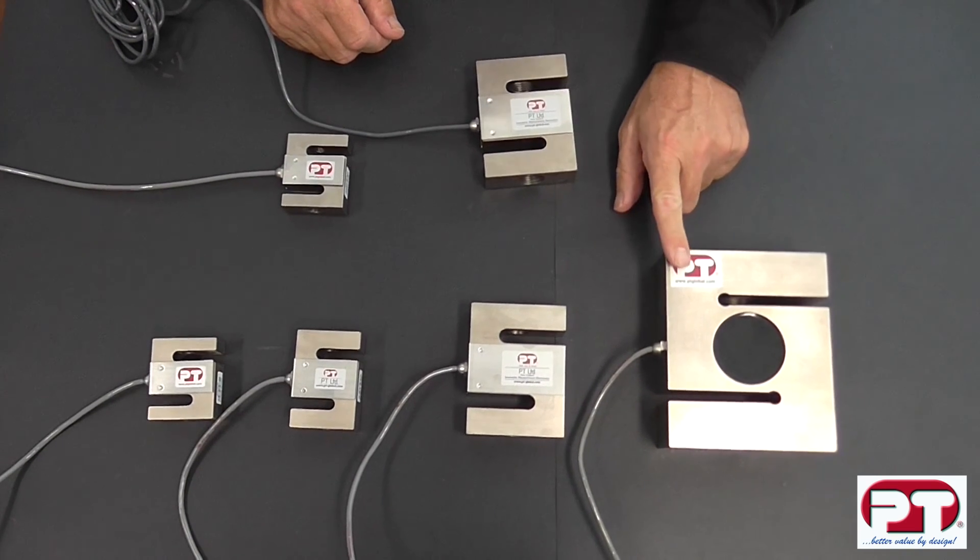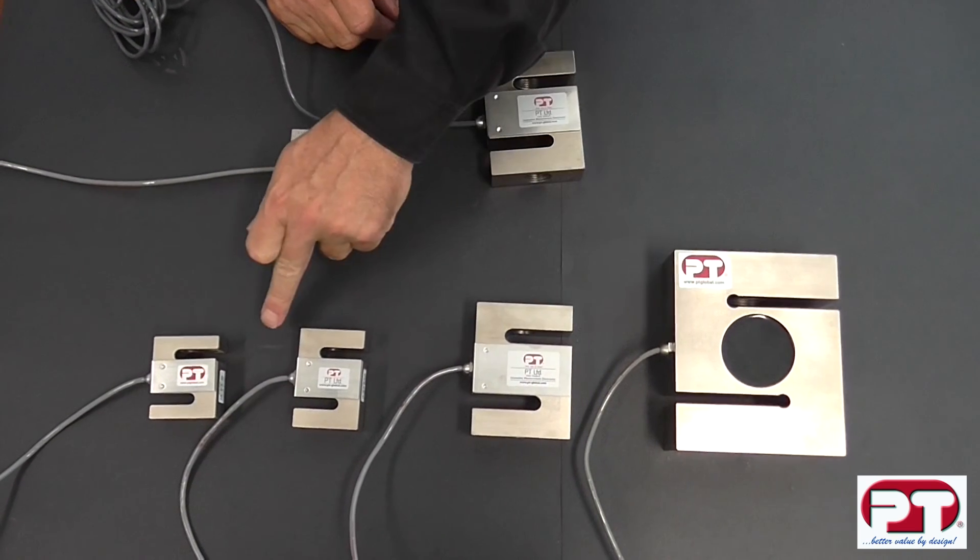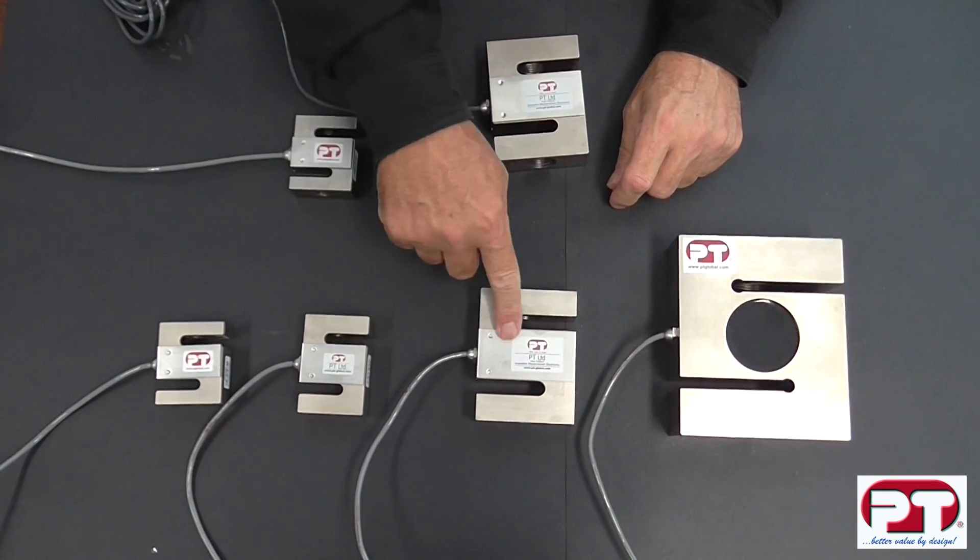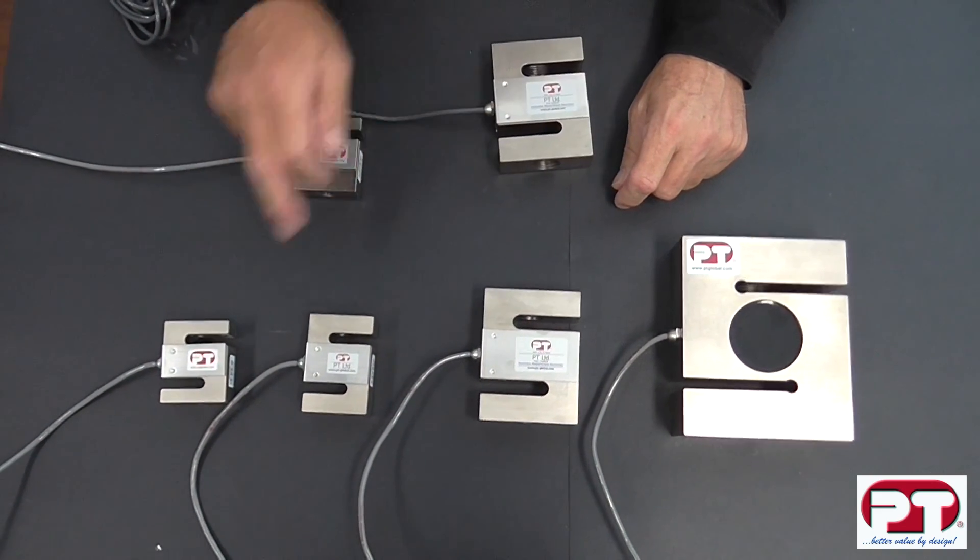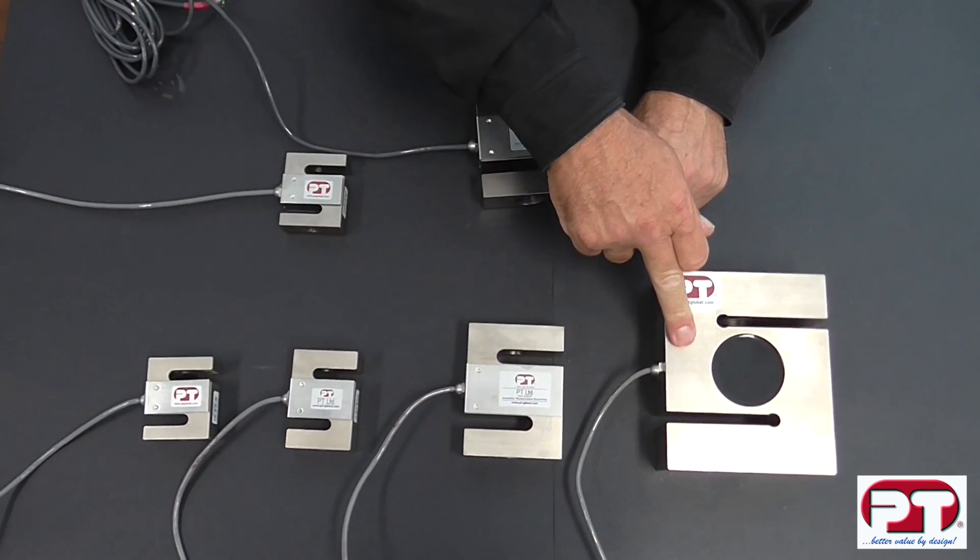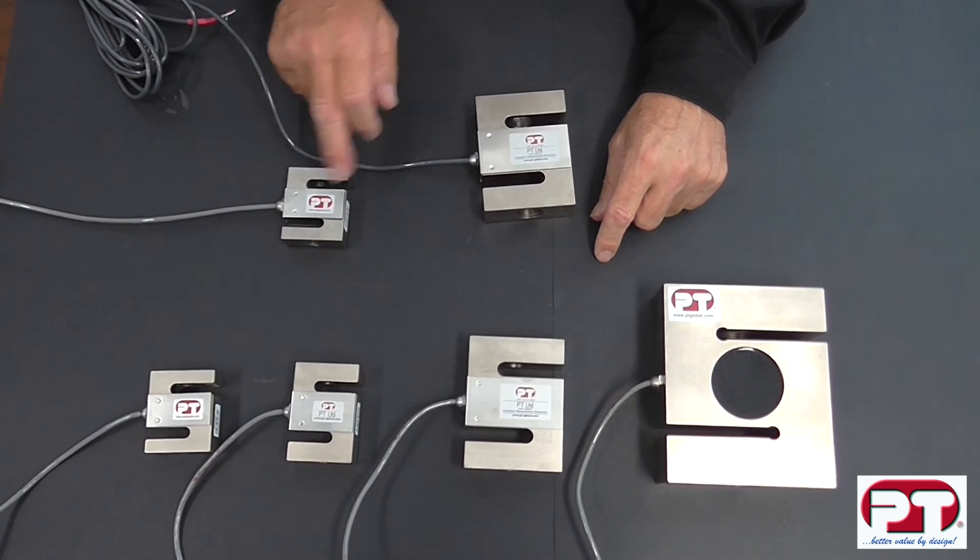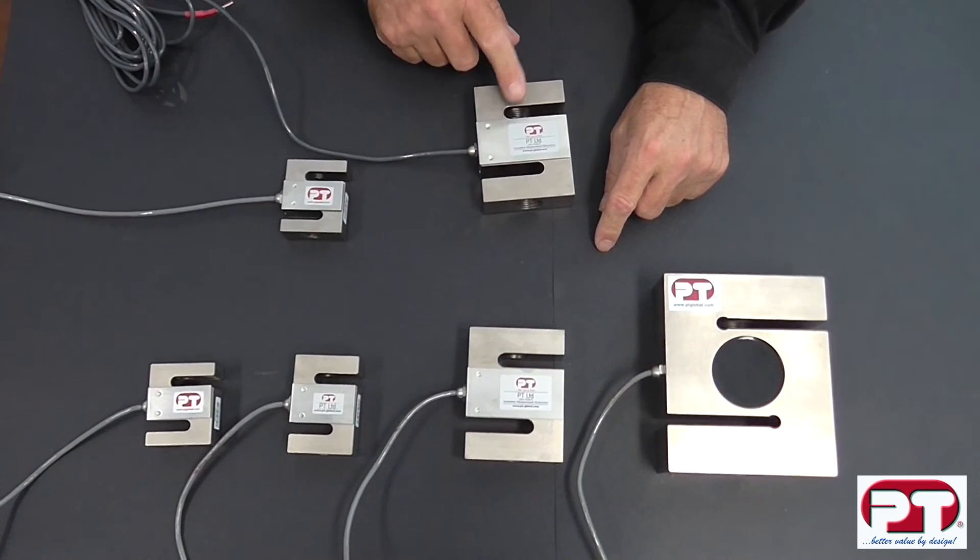In imperial, which is made with UNF threads, the PT-4000 capacity range is made in four sizes, ranging from 50 pound through to 20,000 pound. And in metric, it is made in two sizes, ranging from 20 kg through to 5 tonne.